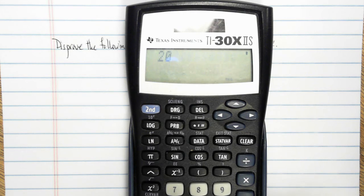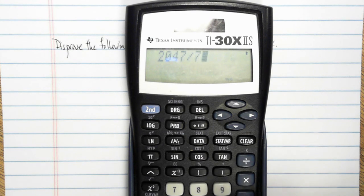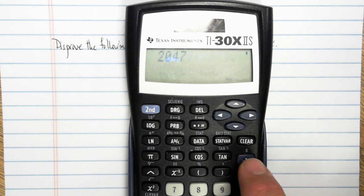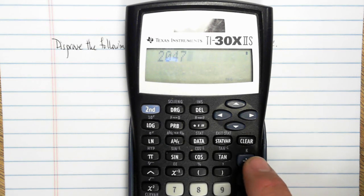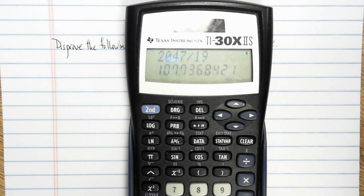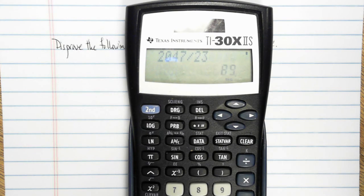Divide by 3 doesn't work. 2047 divided by 5 clearly does not work. 2047 divided by 7 doesn't work. Divide by 11 doesn't work. Divide by 13 doesn't work. Next prime number up is 17 doesn't work. Next one up is 19 doesn't work. And the next one up is 23. And lo and behold, that one goes in evenly.